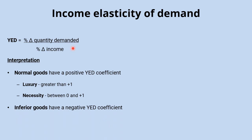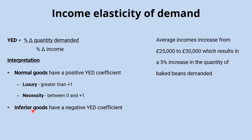Inferior goods have a negative income elasticity of demand because the relationship is inverse — an increase in income leads to a decrease in demand, or vice versa. Doing negative divided by positive, or positive divided by negative, gives a negative coefficient, identifying an inferior good.